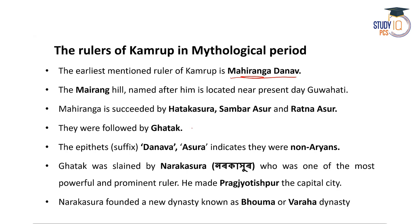The suffixes or epithets like Danav or Khur indicate that these kings were of non-Aryan origin. Ghatak was slain by Narakasura, the most powerful and most famous ruler of ancient Kamrup. Narakasura made Pragjyotishpur the capital city and founded a new dynasty called the Bhoma or Boraha dynasty — a very common competitive examination question.